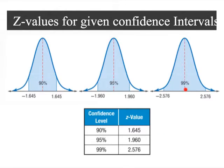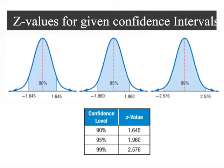If we're 99% confident, as you can see, it's almost the whole curve, so we use a Z-score of 2.576. I just want to let you see two visuals — I personally like the table better, but the graphical depiction may help some of you.